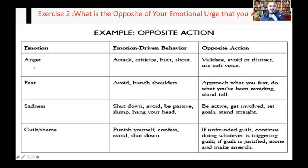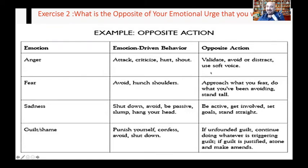For example, if you have anger problems — when people are angry, the emotion-driven behavior is to attack others, criticize them, hurt them, shout at people. So next time you are angry, do the opposite action: validate, use a soft voice, do some distraction technique, avoid — but don't attack, criticize, or hurt other people.